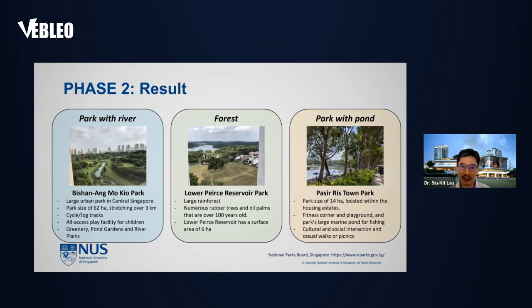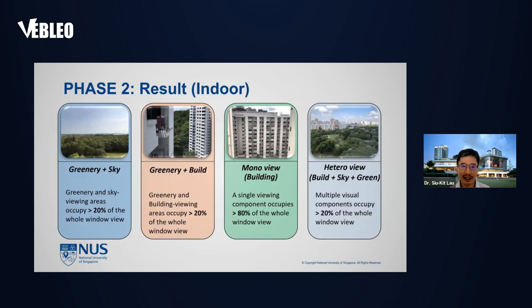Regarding the visual environment outdoors, we identified several natural environments observed from the residential space, such as a large city park, a wooded forest, and a complex city park with various active activities. The natural environment would bring biophonic sounds as well as greenery and water views. Likewise, in the indoor environment, we collected a number of window-view photos and categorized them based on their visual composition. Here are examples of the categorization: the first two on the left contain views with more than one type of visual feature, the third contains a single type of visual feature only — in this case, a building view only — and the last contains all three visual components.